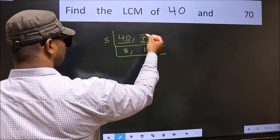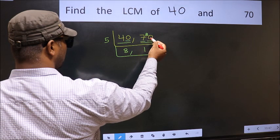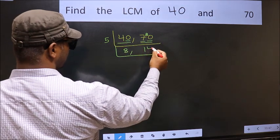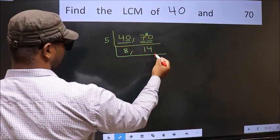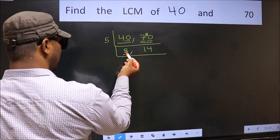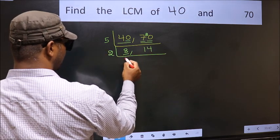7 minus 5 is 2, carried forward 20. When do we get 20 in the 5 table? 5 fours are 20. Now here we have 8, and 8 is 2 fours are 8.